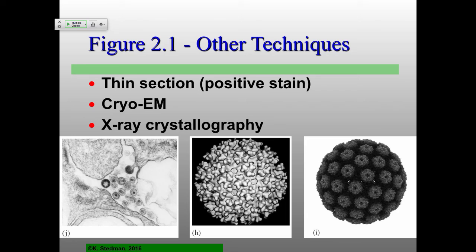There are a number of other techniques getting to higher and higher resolution that are harder to do. The next one is thin sections: instead of just taking your solution and putting stain with it, you take an infected cell and make really, really thin slices — in the order of hundreds of nanometers — using an ultramicrotome. You can stain those to get electron density. In this particular case you can see individual HIV virions being positively stained, with the envelope around the outside and the nucleocapsid on the inside. Those are things you can use standard electron microscopes for.